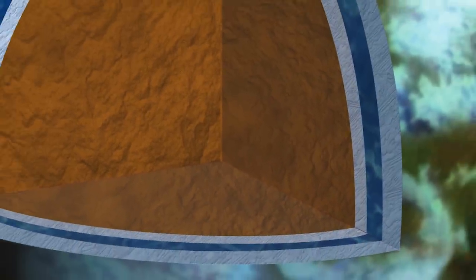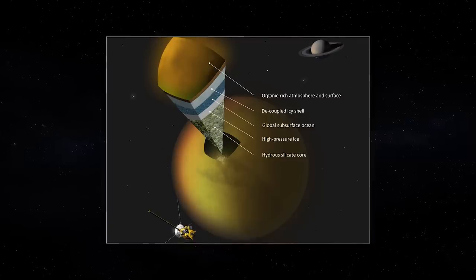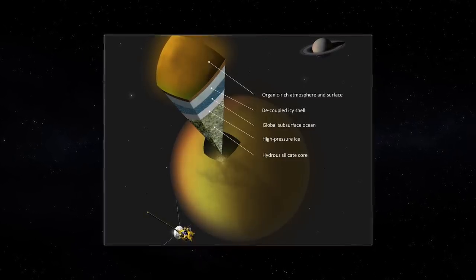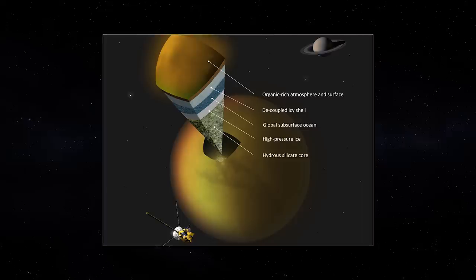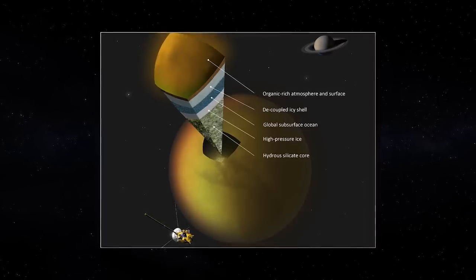A liquid subsurface ocean composed of water and ammonia is found under the crust. This is possible due to heat and pressure within Titan's interior, and to some extent, tidal forces from Saturn, which combined produces enough heat to sustain liquid water below its surface.